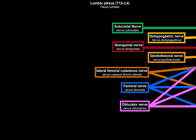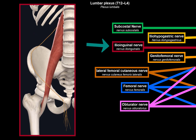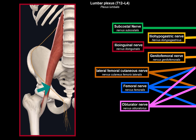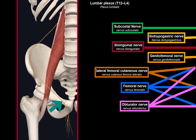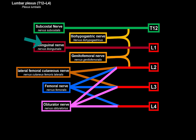The ilioinguinal nerve traverses laterally from the psoas major, below the iliohypogastric nerve. It follows the iliohypogastric nerve initially, then travels through the inguinal canal to innervate the skin on the anterior scrotum in men, and the skin on the anterior labia majora in women. It is primarily a cutaneous branch.